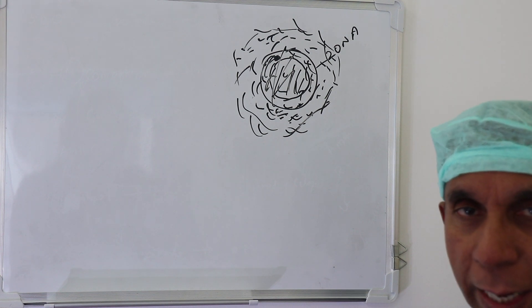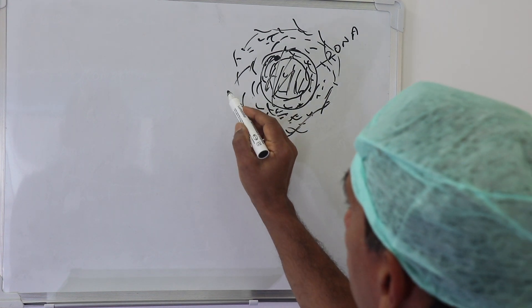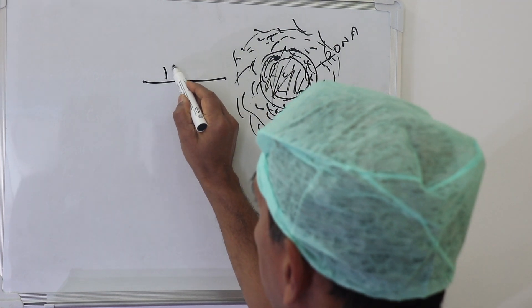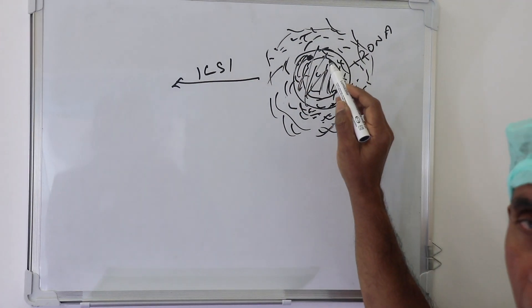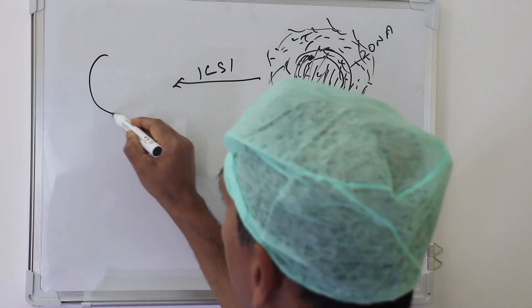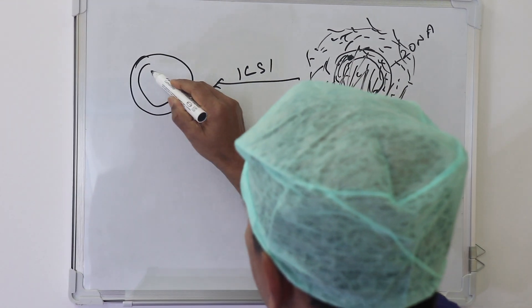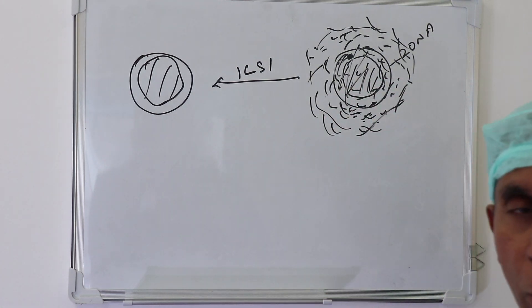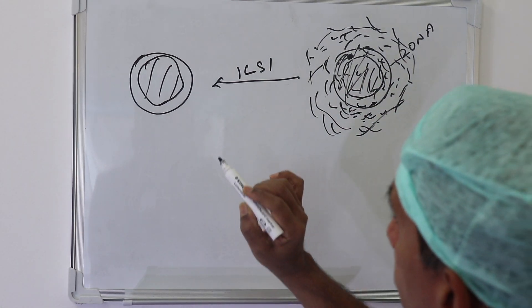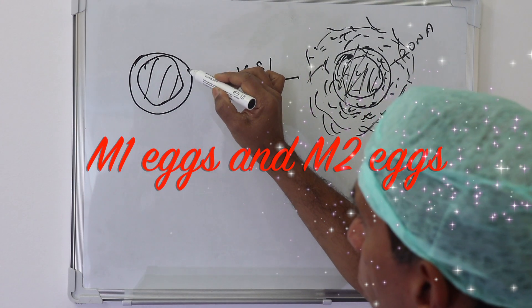So when do we first see the egg? Suppose if we are doing ICSI, we are going to take all these cells, so then we will see the egg very clearly with the zona and the cytoplasm. Then only we can be sure of the stage of maturation.